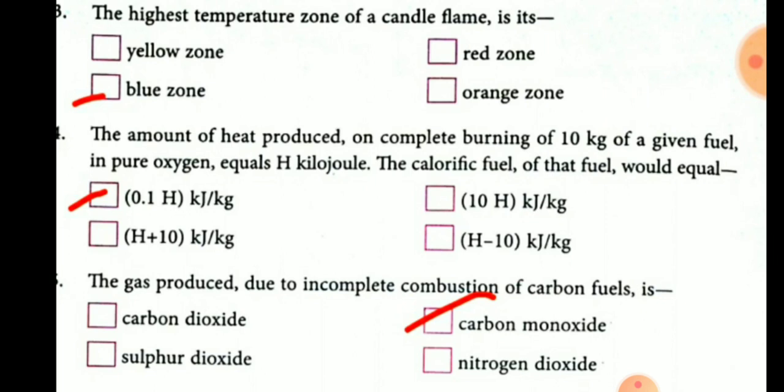The fifth question: the gas produced due to incomplete combustion of carbon fuel — this is very important and was also asked in the fill-in-the-blanks. The answer is carbon monoxide, with symbol CO.